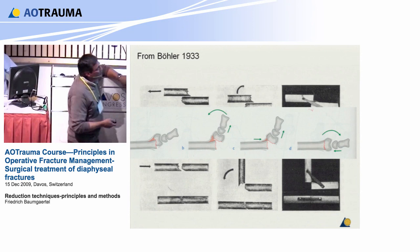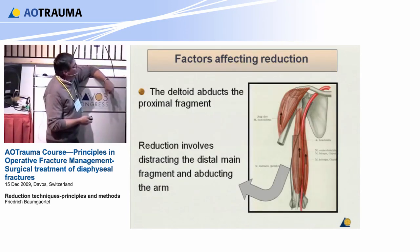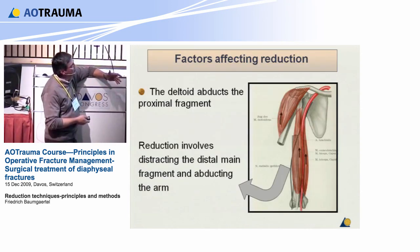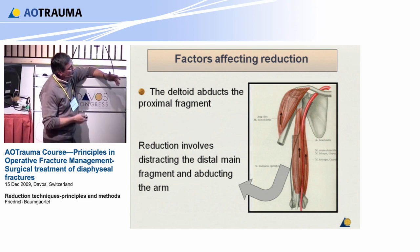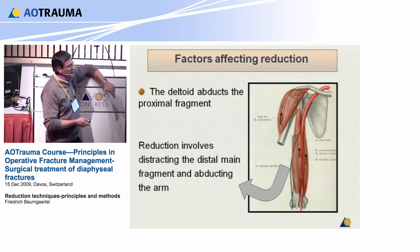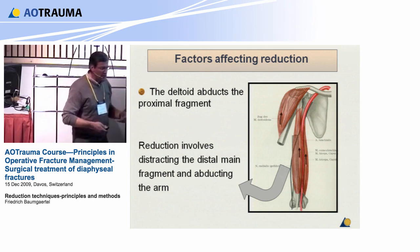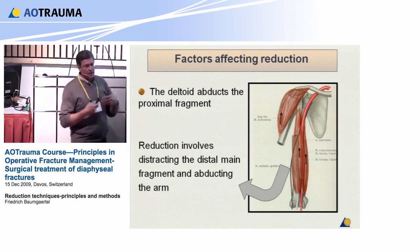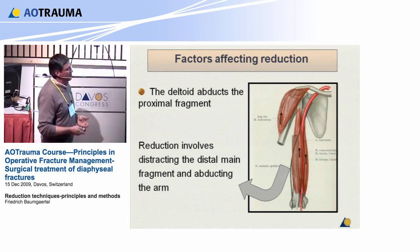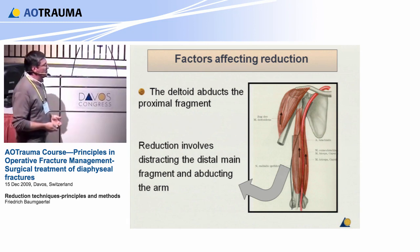So what do we do with this arm? The reduction involves distracting the main element — the main distal fragment — and abducting the arm. This can be done manually, and it can also be done with a variety of tools.